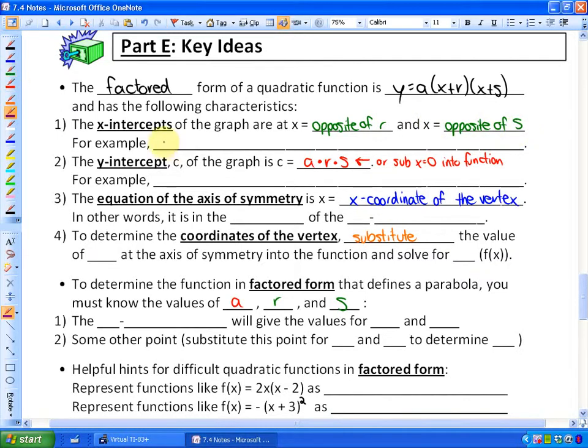For example, if I had a function y = 2(x+1)(x-5), you would look at the values r and s and know that the x-intercepts are the opposite of those. So you would have x-intercepts of -1 and positive 5.